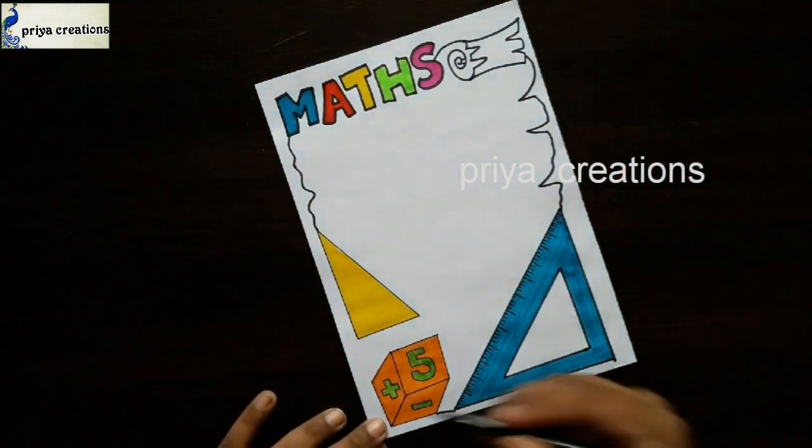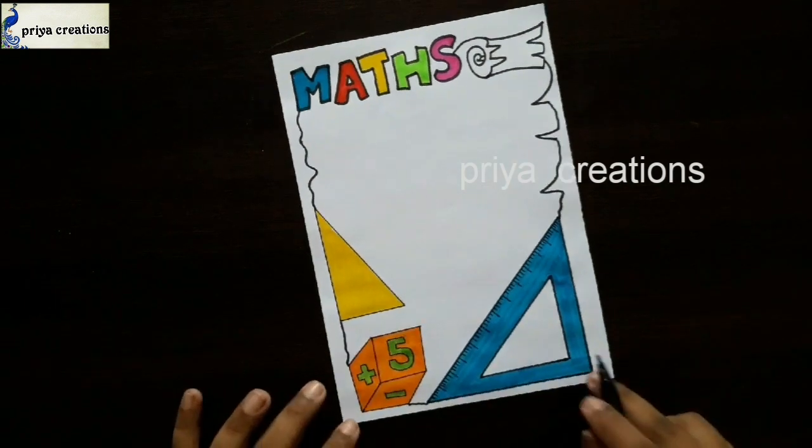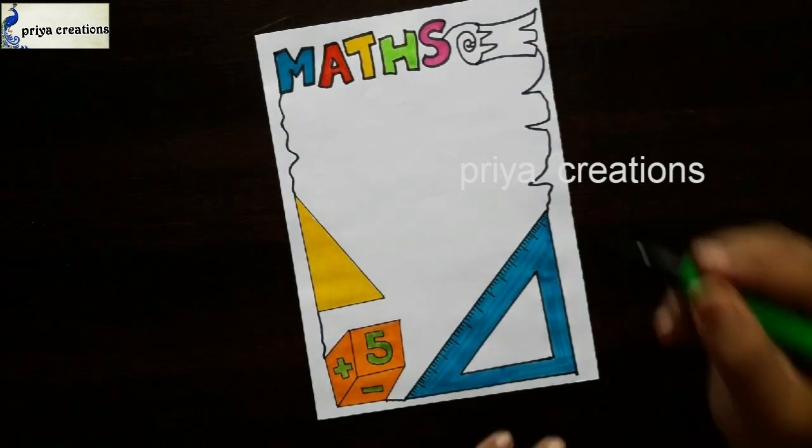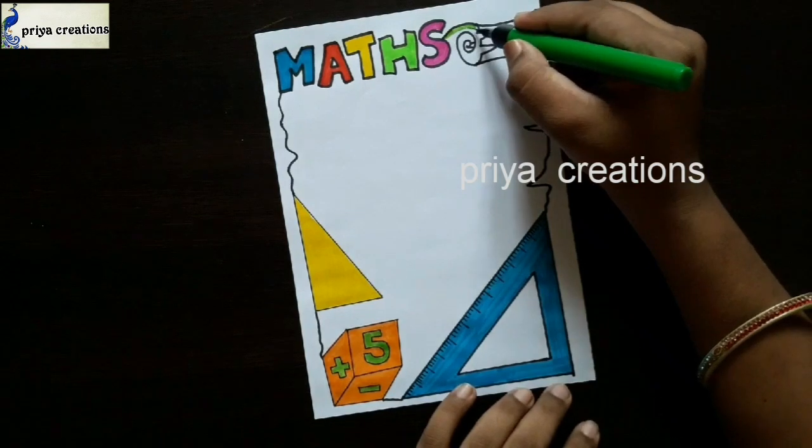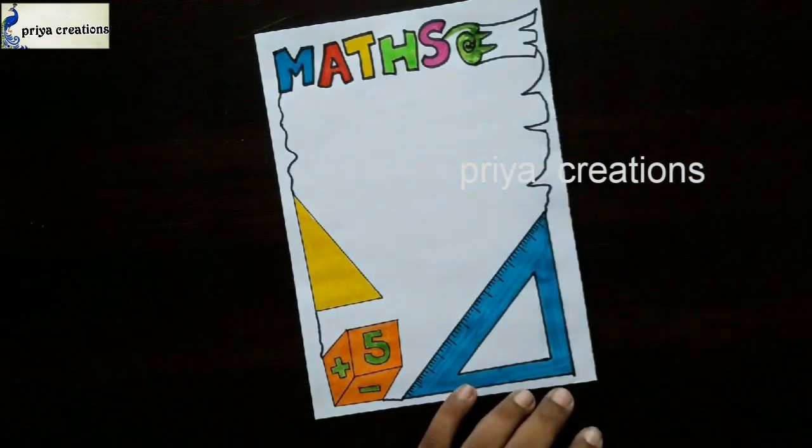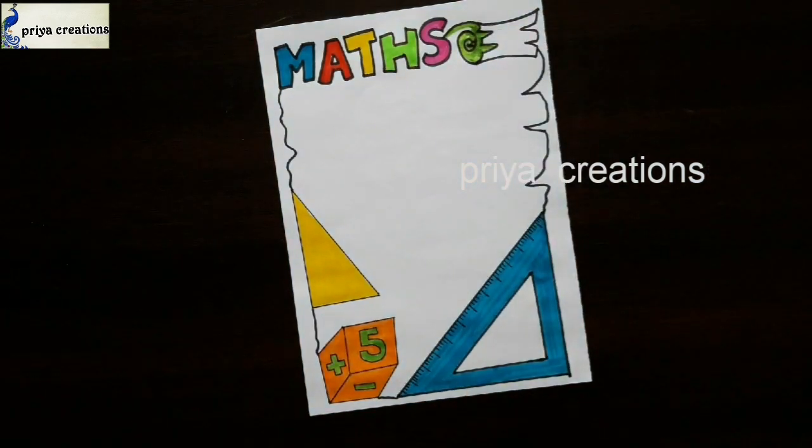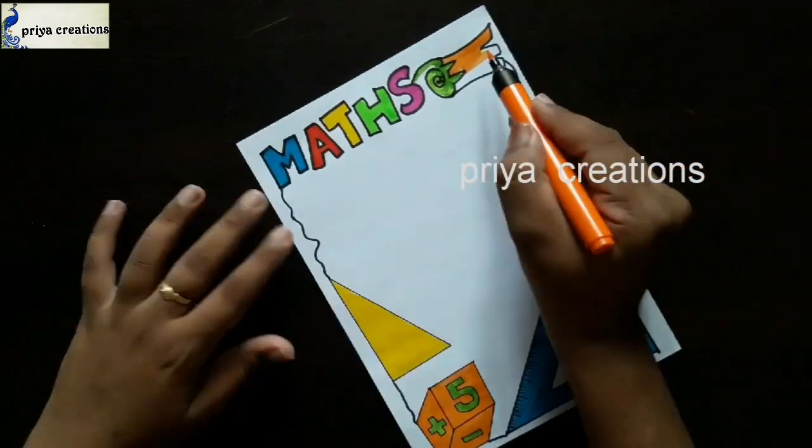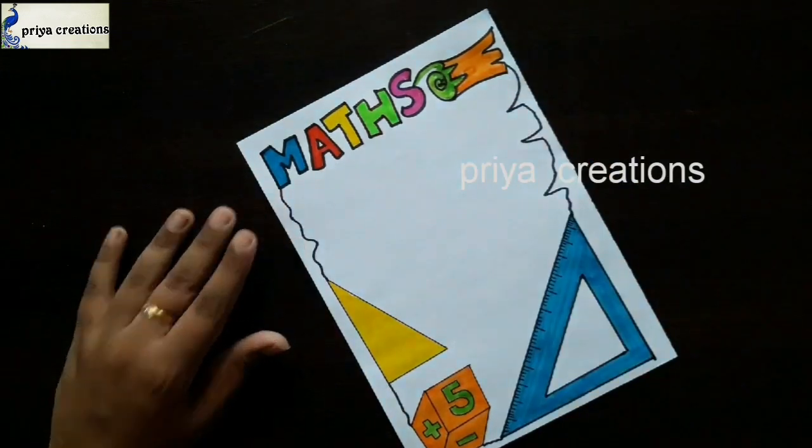Draw a frame like this. Here I am using pink color brush pen for border design. Fill like this. This is orange color brush pen.